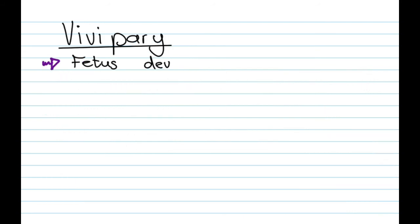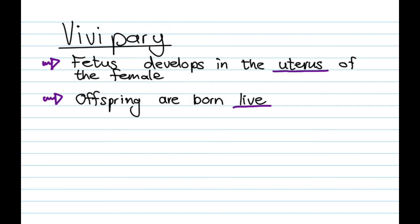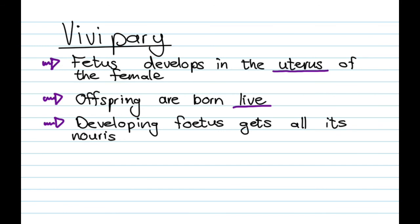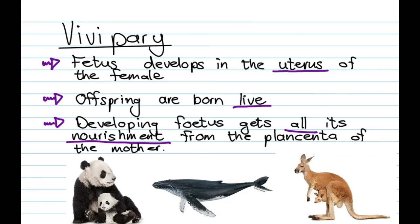Lastly is vivipary. We're going to hear this a lot when we talk about mammals, because the fetus — they start talking about a fetus instead of an embryo — develops inside the uterus of the female. The offspring are definitely born live. Until they're ready to be born, the developing fetus gets all of its nourishment from the placenta of the female. Examples include pandas, whales, and even marsupials like kangaroos.